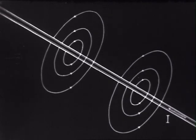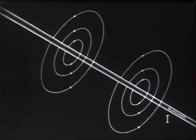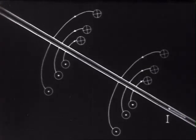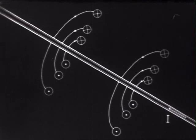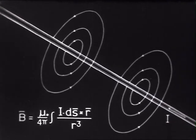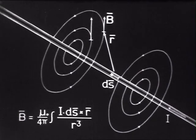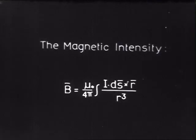An electric current is always surrounded by a magnetic field, the force lines of which create closed curves around the current path. The current direction in the conductor decides in which way the magnetic force lines shall travel. The contribution from an incremental part of the current to the magnetic intensity at a given point is proportional to the current element and inversely proportional to the square of the distance to the point.